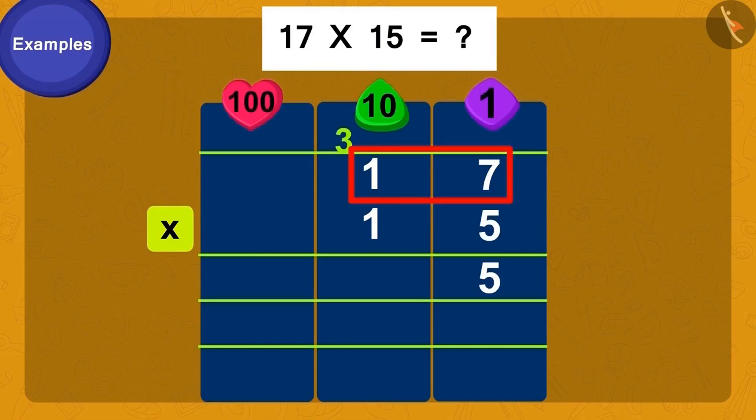Now, we multiply 1 of 17 by 5 of 15. Got it? 5.